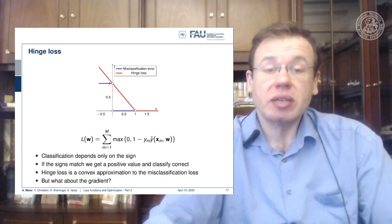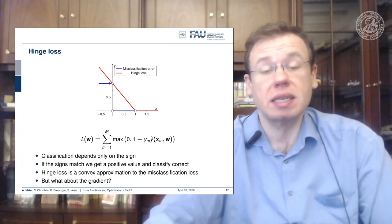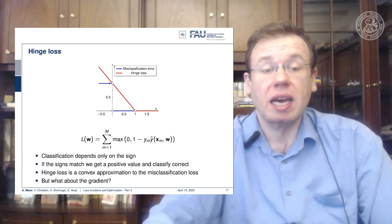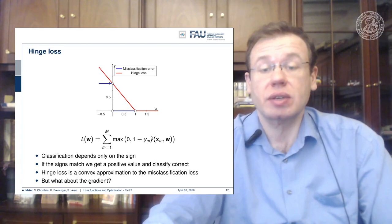That's a very interesting way of formulating the same problem. We get implicitly the situation that we only consider the misclassified samples in this loss function. You could say, or it can be shown, that the hinge loss is a convex approximation of the misclassification loss that we considered earlier.